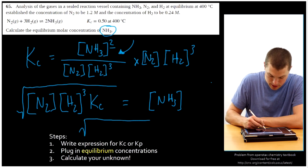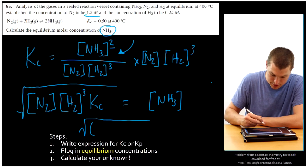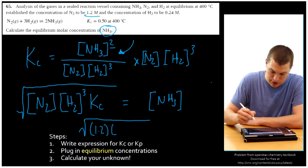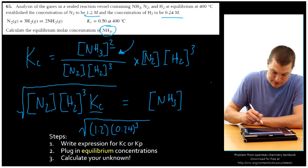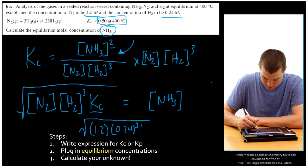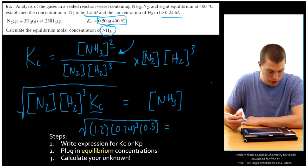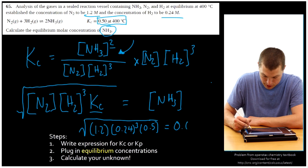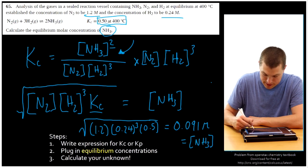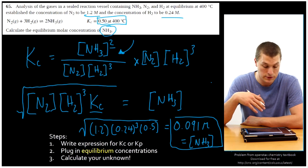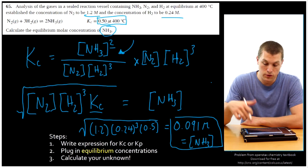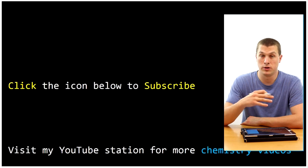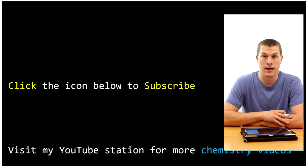Plugging in our values: the concentration of nitrogen is 1.2 molar, hydrogen is 0.24 molar cubed, and Kc is 0.5. Taking the square root of all of that, we get our concentration of NH3 = 0.091 molar. I kept two significant figures because we have two sig figs in our given concentrations. So these are some simpler equilibrium calculations where we have all but one unknown. Thanks for watching Real Chemistry — check the link below for harder equilibrium calculations, and feel free to subscribe and like the video.